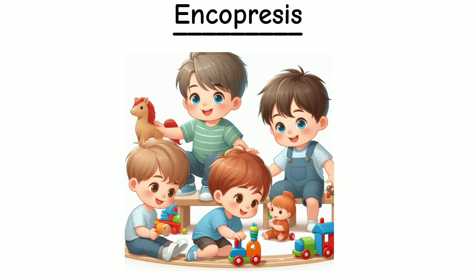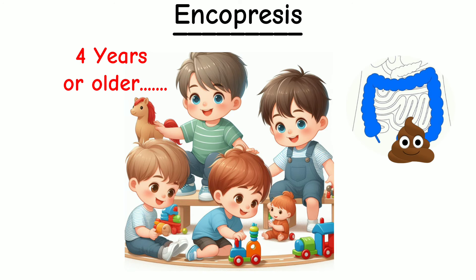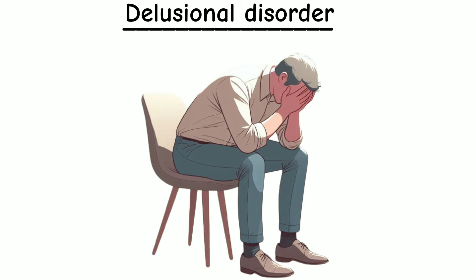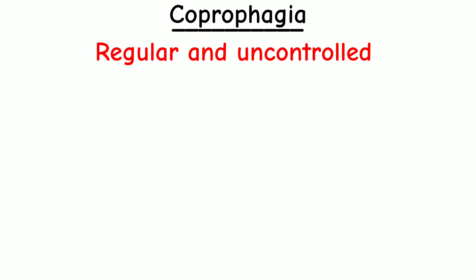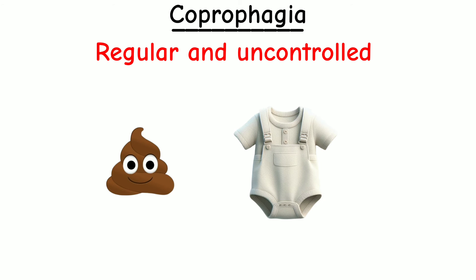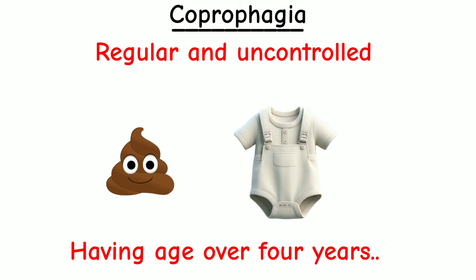Encopresis is a disorder that almost always affects children four years or older, and it involves the usually involuntary passage of stool for someone who is otherwise toilet trained. Delusional Disorder: a person with this has wrong and unreal beliefs that persist over time. Coprophagia refers to regular and uncontrolled defecation in clothes or other inappropriate places in persons over four years of age.